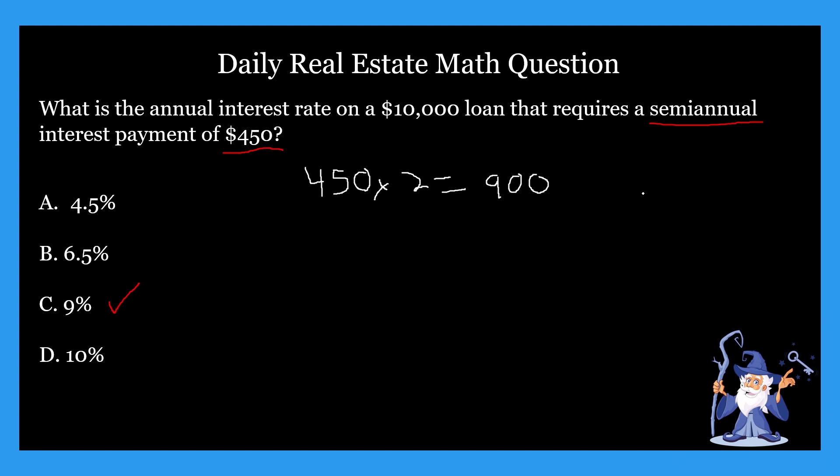Why are we doing that? It's asking us what the annual interest rate on the loan is. So we're looking at it from a yearly perspective. If it was asking us what the semi-annual interest rate would be, it would be a different problem. But because it's asking us for the annual interest rate, we have to double what they gave us because it was the semi-annual.